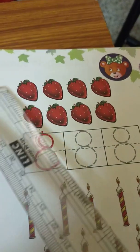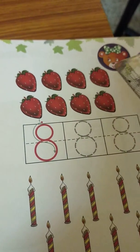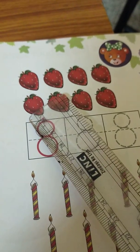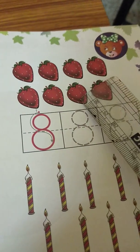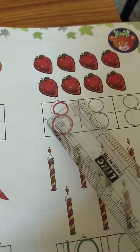How many strawberries are there? One, two, three, four, five, six, seven, eight. So here I write, eight.